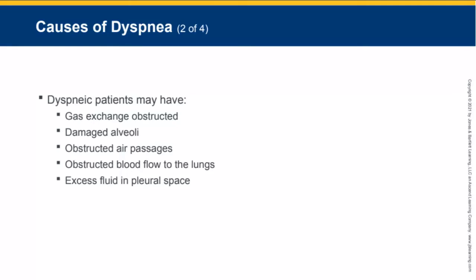Be aware that one or more of the following situations may exist in a patient experiencing respiratory distress: gas exchange between the alveoli and the pulmonary circulation is obstructed by fluid in the lungs, infection, or collapsed alveoli. The alveoli may be damaged and cannot transport gas properly across their walls. The air passages are obstructed by muscle spasms as in asthma, mucus as in bronchitis, or weakened or floppy airway walls. Blood flow to the lung is obstructed by blood clots, such as during pulmonary embolism. The pleural space may be filled with excess air or fluid so the lungs cannot properly expand, as happens during pleural edema or pneumothorax.